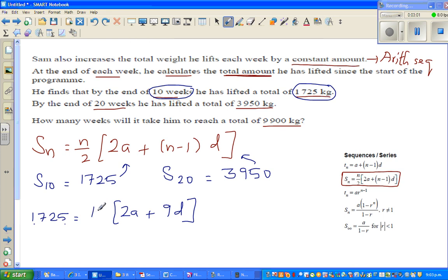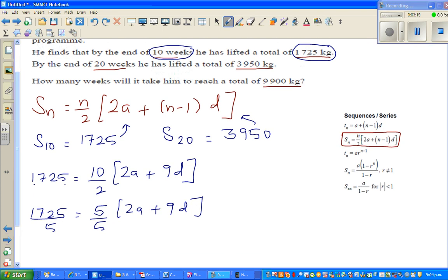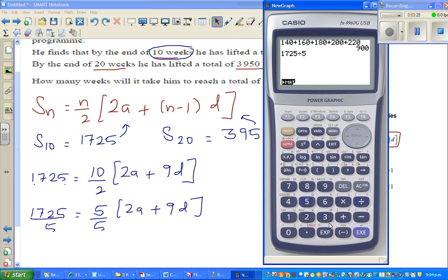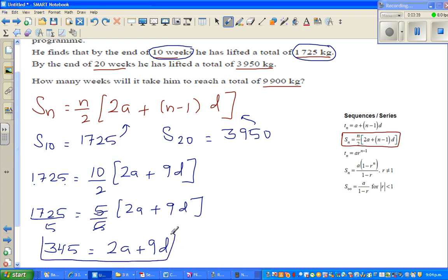So 1725 is 5 times 2a plus 9d. If I divide this side by 5, I have to divide that side by 5. I need a calculator: 1725 divided by 5 is 345. So this becomes 345 equals 2a plus 9d. This is equation 1.